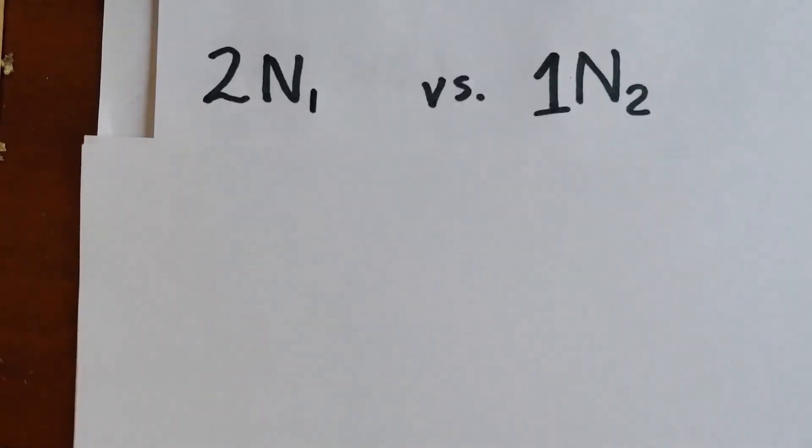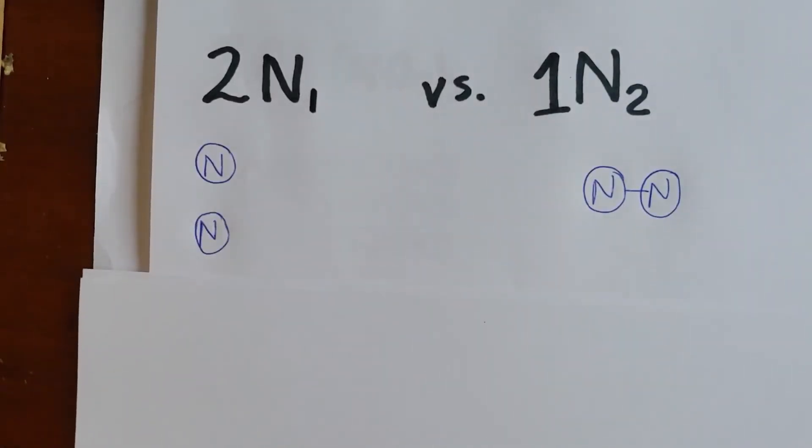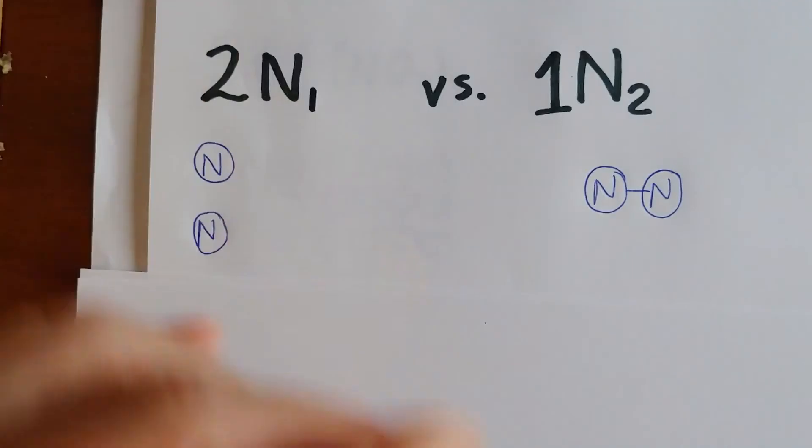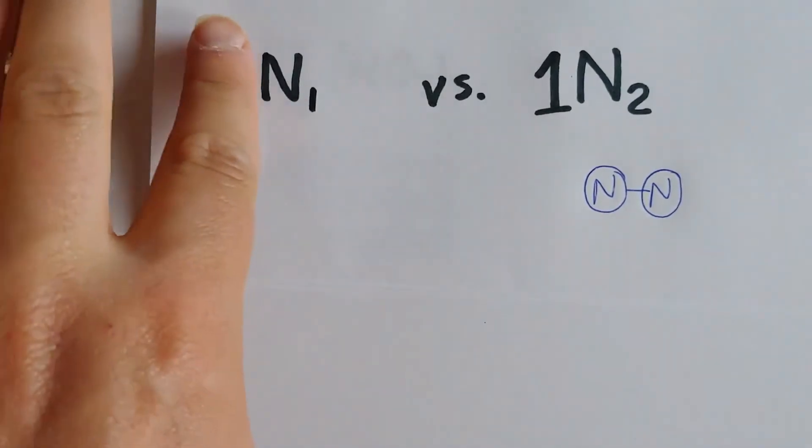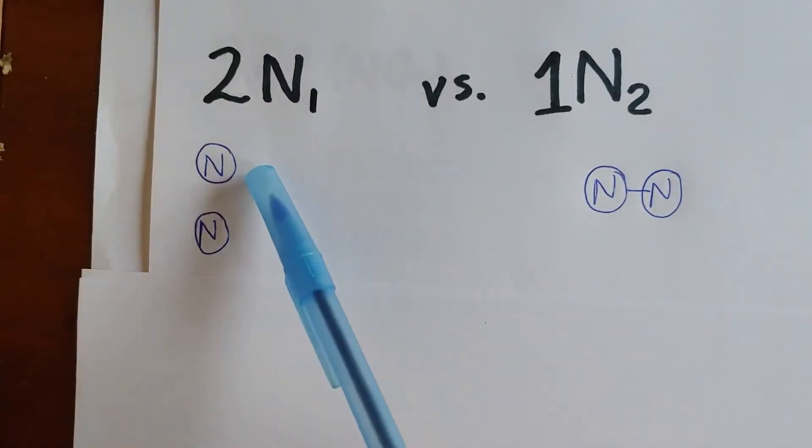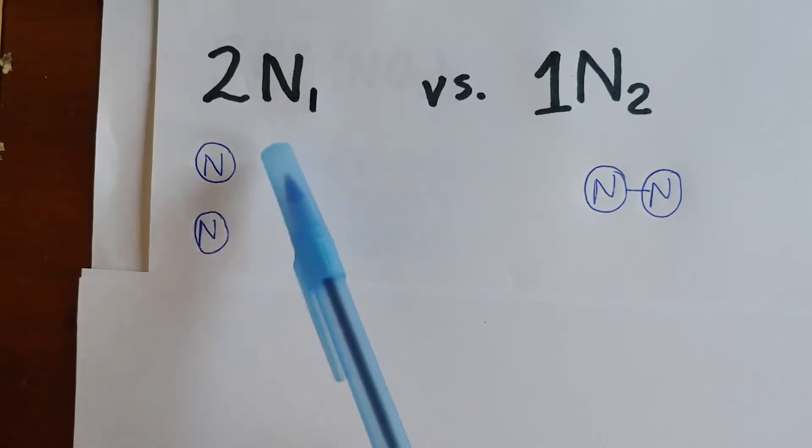So when we draw these, this is how it would look. 2N1 means you draw a single nitrogen, right? We cover that with our hand, a single nitrogen atom. And then we make two copies of it.